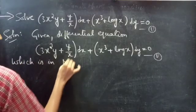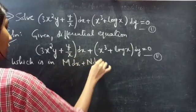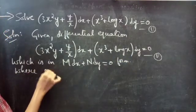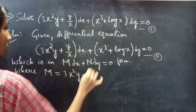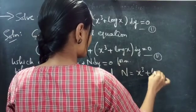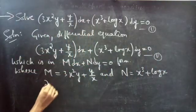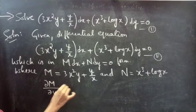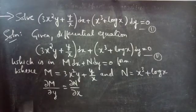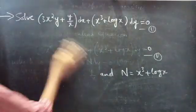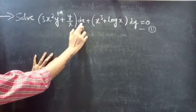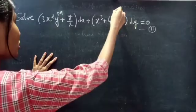It is in M dx + N dy = 0 form, where M equals 3x² y + y/x, and N equals x³ + log x. The terms containing the differential dx give M, and the terms containing the differential dy give N.